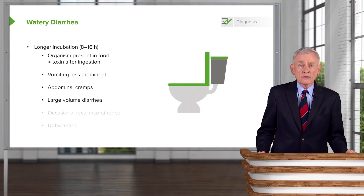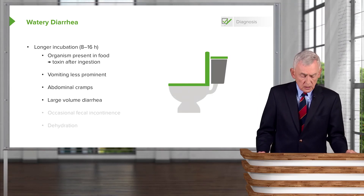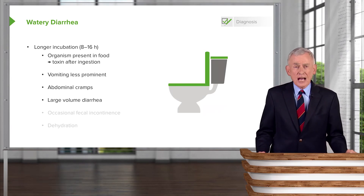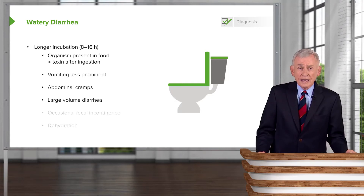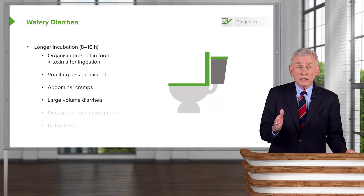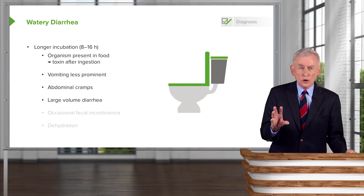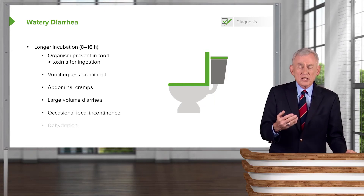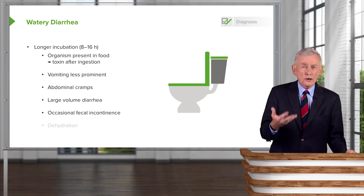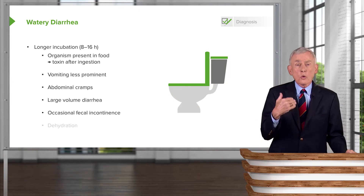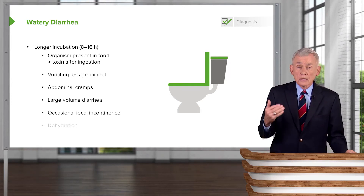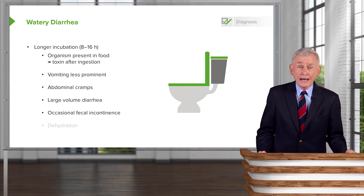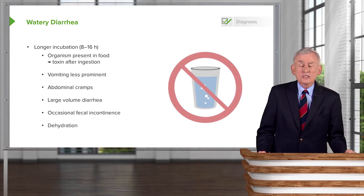We ought to ask about the volume of the diarrhea — how many times a day, and is it large volume or just small volume? Watery diarrhea is characterized by large volume diarrhea. Sometimes patients have so much watery diarrhea that they can't hold it. A question you might ask is: 'Mrs. Jones, have you ever had an accident on yourself because of your diarrhea?' And obviously, look for signs and symptoms of dehydration like excessive thirst.